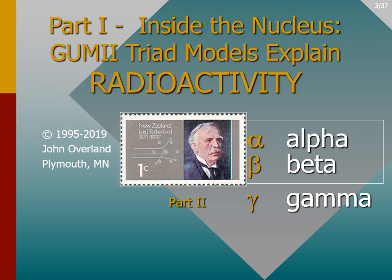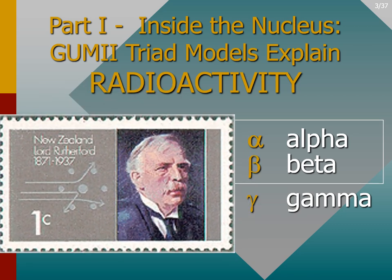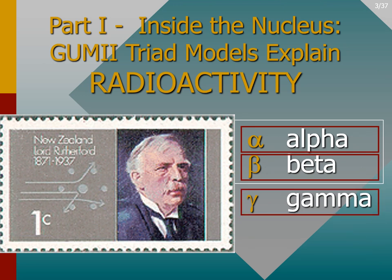That's when Ernest Rutherford separated uranium radioactive rays into three types, and named them after the first three letters in the Greek alphabet: alpha, beta, and gamma. He named each type according to the distance it traveled through matter. Fortunately, he also found that all radioactive rays could be stopped by a quarter inch of lead.